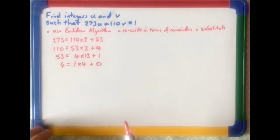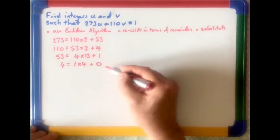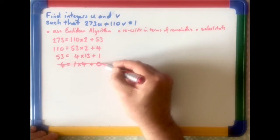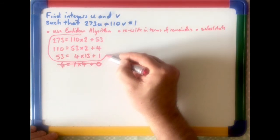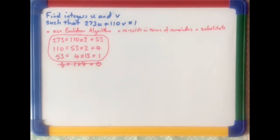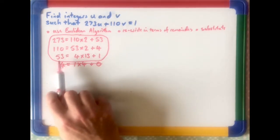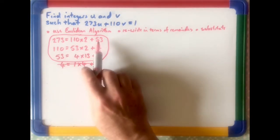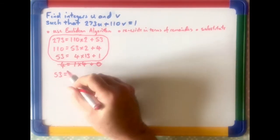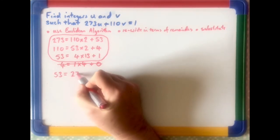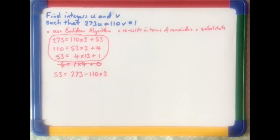However, what we then do is we forget about the last one. We're not interested where the remainder's 0. But we look at these three here, or however many you've got to get to that point. And what we do is we rewrite these, but in terms of the remainder. So the top one would give me the remainder is 53, and that's 273 minus 110 times 2.